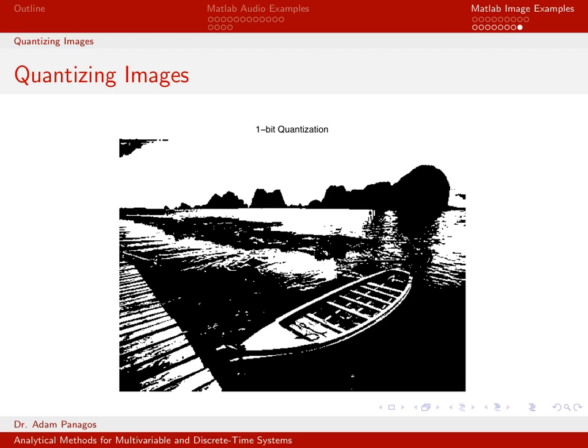By the time we get down to 1-bit quantization, obviously this looks nothing like our starting image. You can still kind of make out what's going on — maybe you can still guess there's a dock and a boat — but some of these details are lost. Obviously it requires a lot less information in terms of storage space, but we have definitely thrown away a lot of information. So that wraps up this sequence of videos where we've looked at audio signals and image signals, and looked at both sampling and quantizing these signals, and the trade-offs and phenomena we see as we experiment with these different parameters.